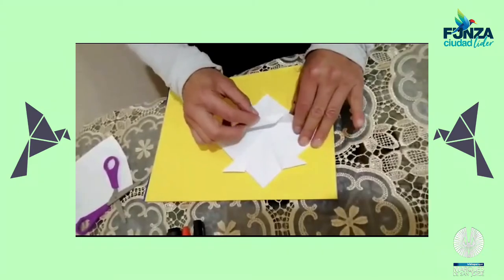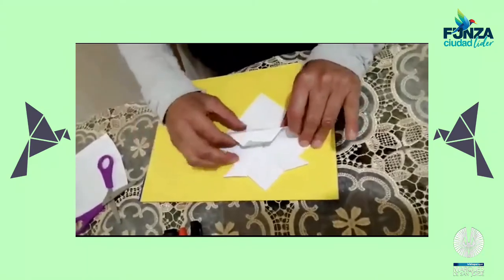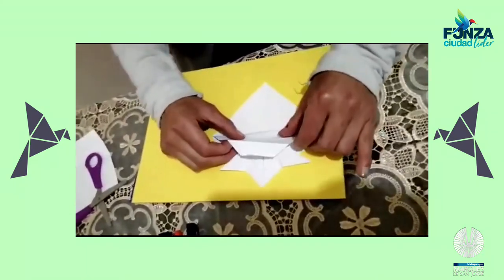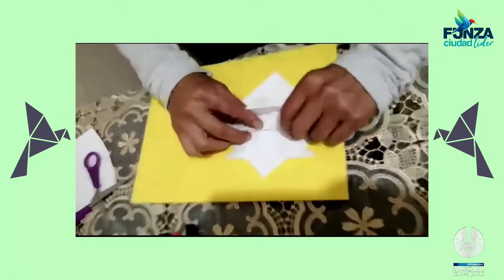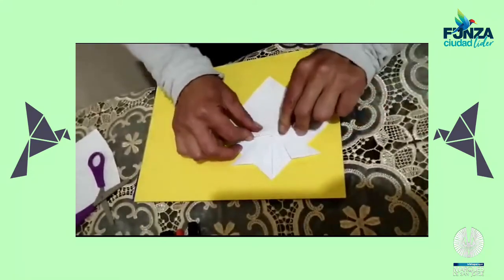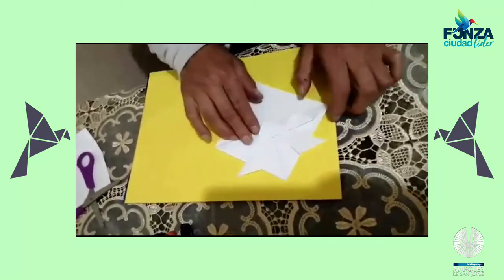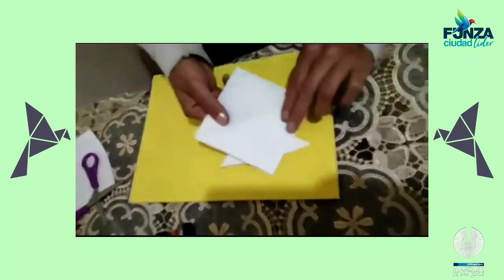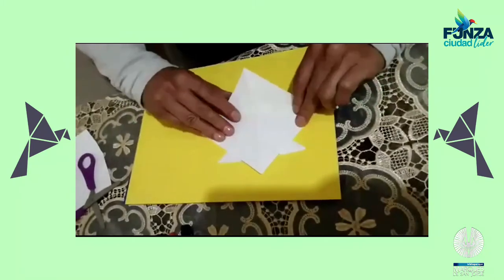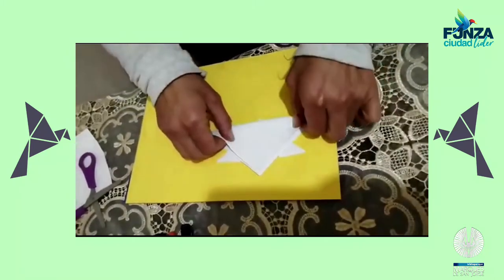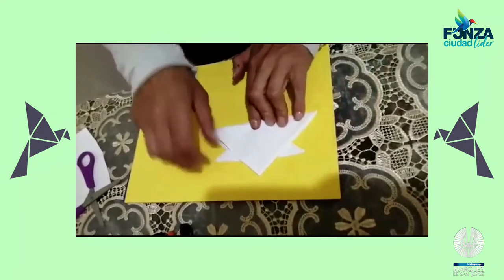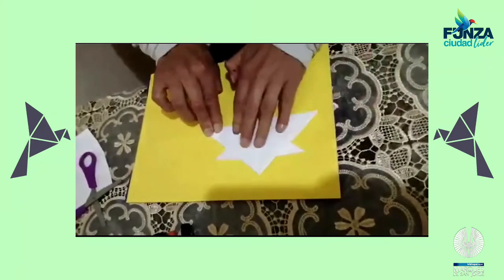Desdoblamos y vamos con los deditos a hacer soporte de la parte de abajo hacia arriba. Listo. Para formar la boca. Damos la vuelta. La parte que nos queda hacia abajo la vamos a doblar.